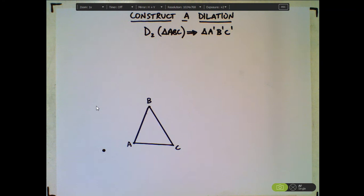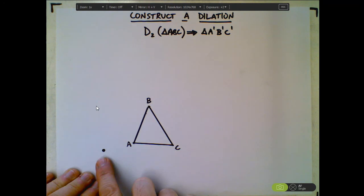Okay, what we're going to be doing today is constructing a dilation. There's two things you have to be given in order to construct a dilation in this fashion. You have to be given the center, which we've been given right here, and then you have to be given the pre-image, which we have triangle ABC.